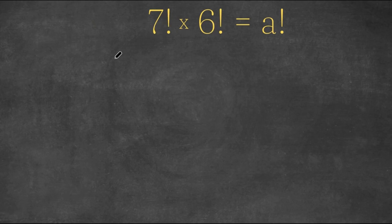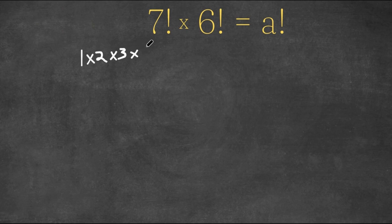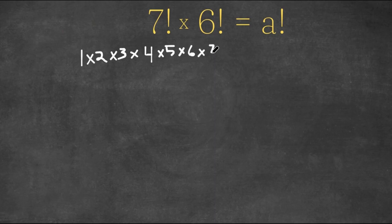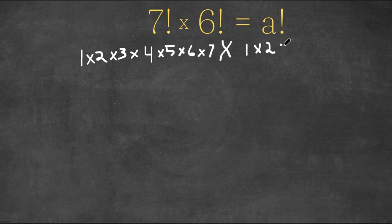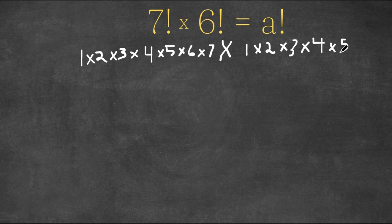Let's rewrite these. 7 factorial is the same thing as 1 times 2 times 3 times 4 times 5 times 6 times 7. And we are multiplying this with 6 factorial, which is the same thing as 1 times 2 times 3 times 4 times 5 times 6. Now, as you can see, we have 1 all the way to 7.